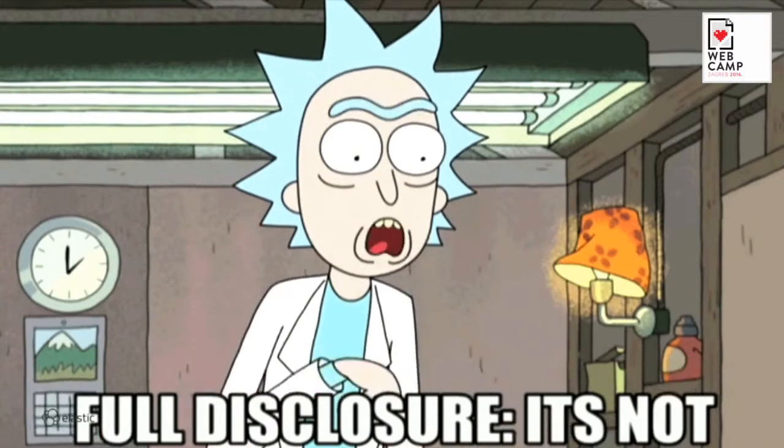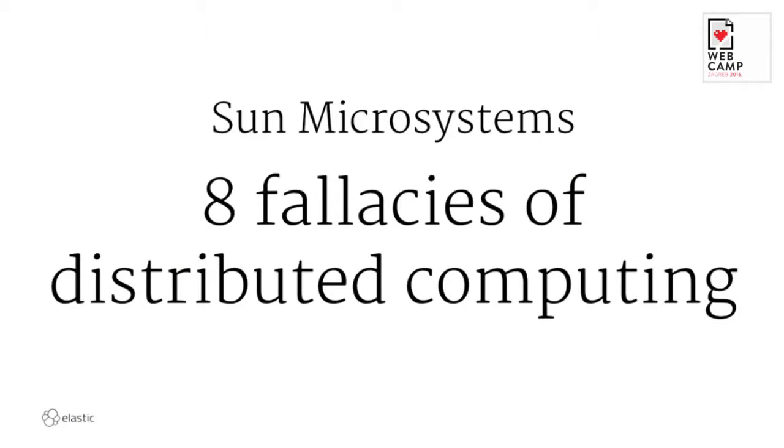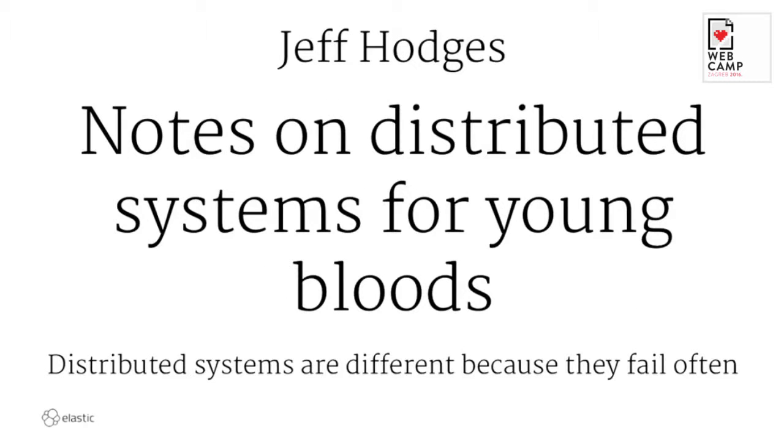Distributed systems are hard. There are the eight fallacies of distributed computing, originally from Sun. If you're more on the up-and-coming technology side, Jeff Hodges from Twitter wrote something similar — 'Notes on Distributed Systems for Young Bloods.' You probably remember the fail whale. His main takeaway is distributed systems are not hard because of latency, but because stuff fails — little bits and pieces fail.